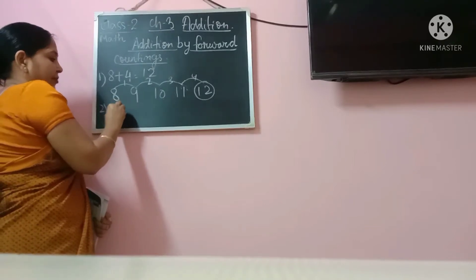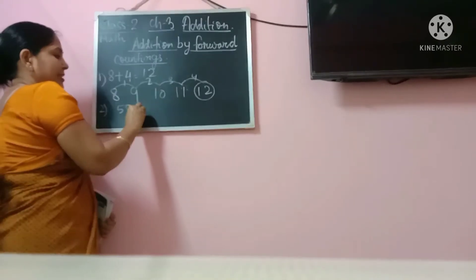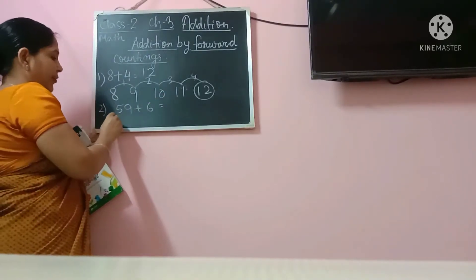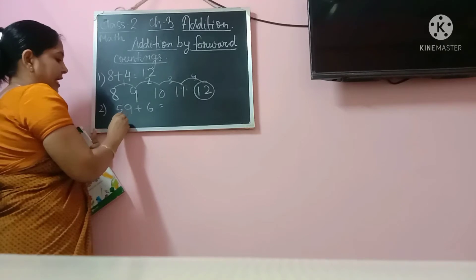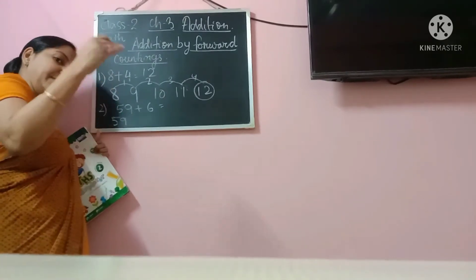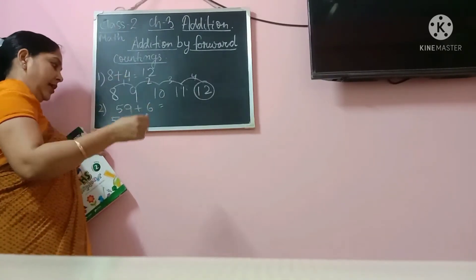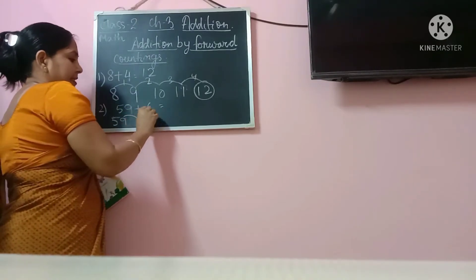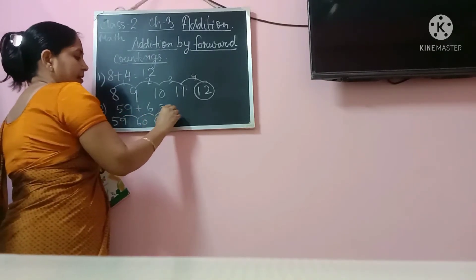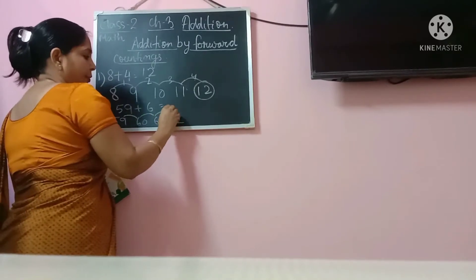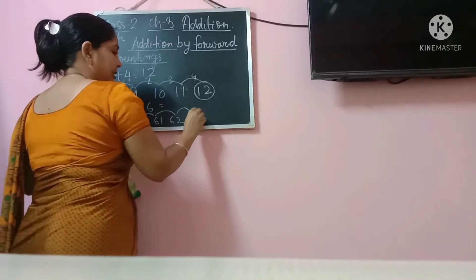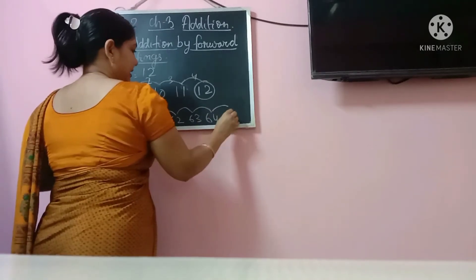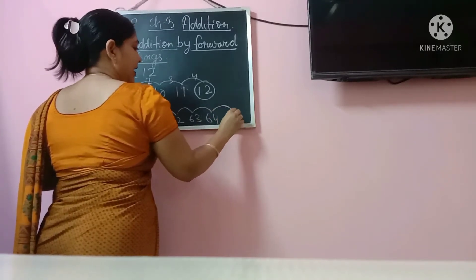Say for example, 59 plus 6. Now what is 59 plus 6? We will write 59 and then we will move 6 steps ahead. So the first step will be 60, second step 61, third step 62, fourth step 63, fifth step is 64 and sixth step is 65.